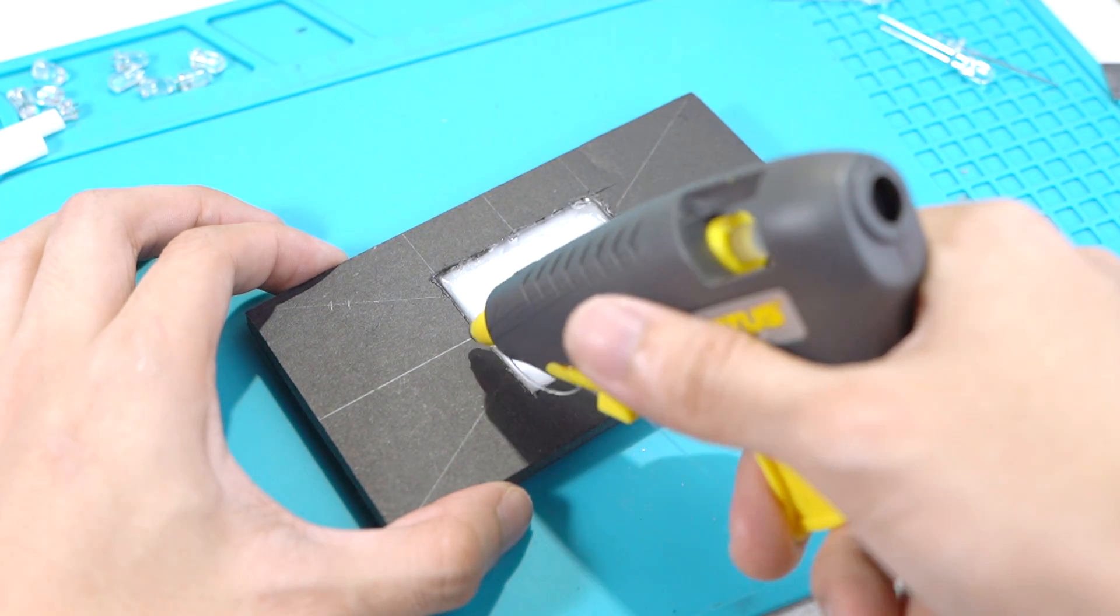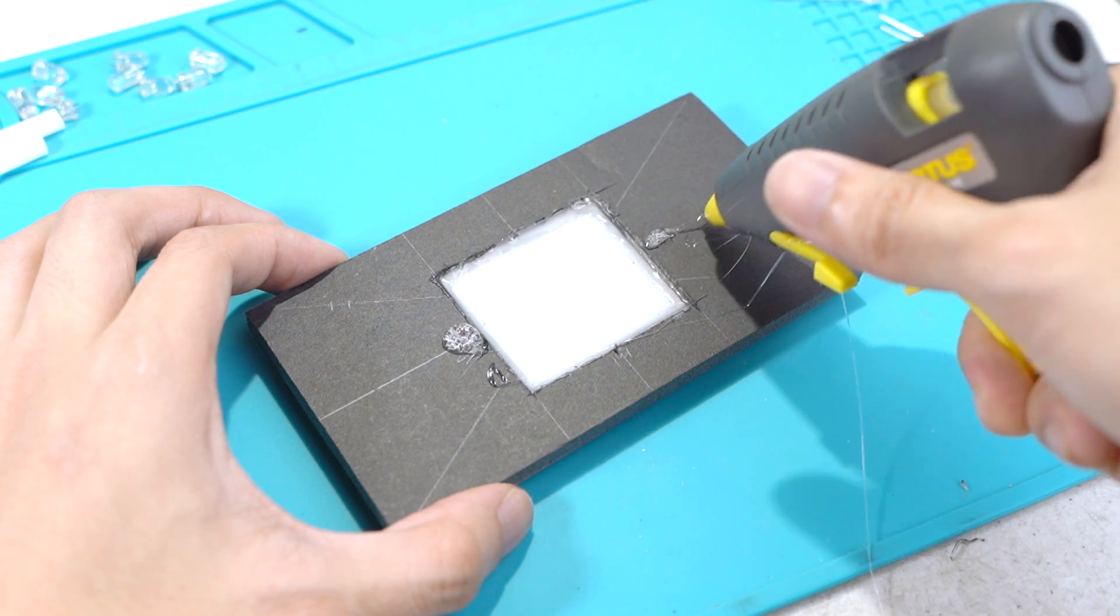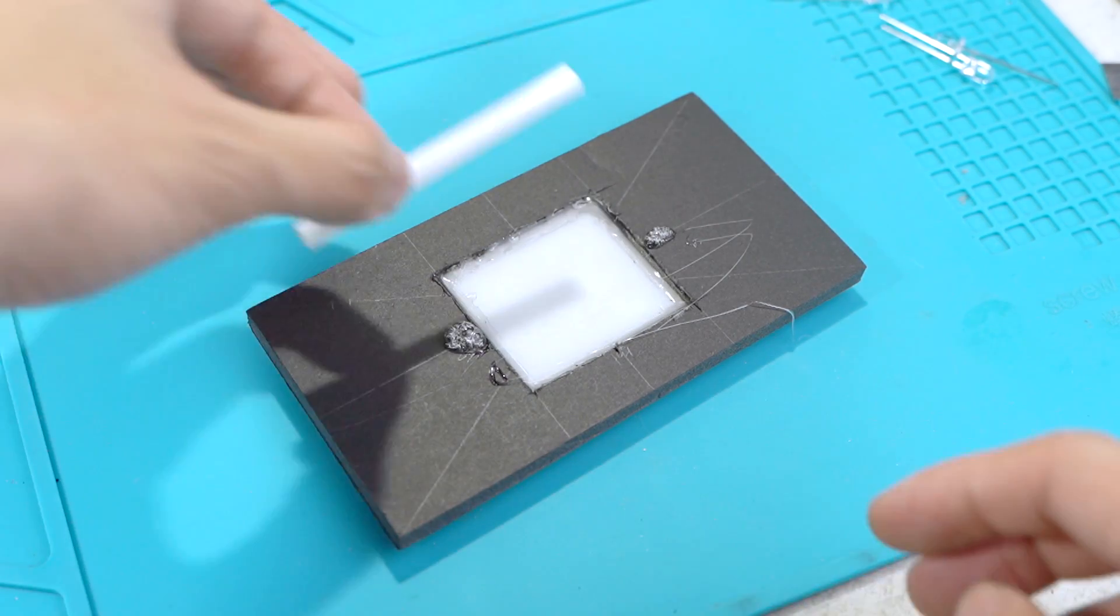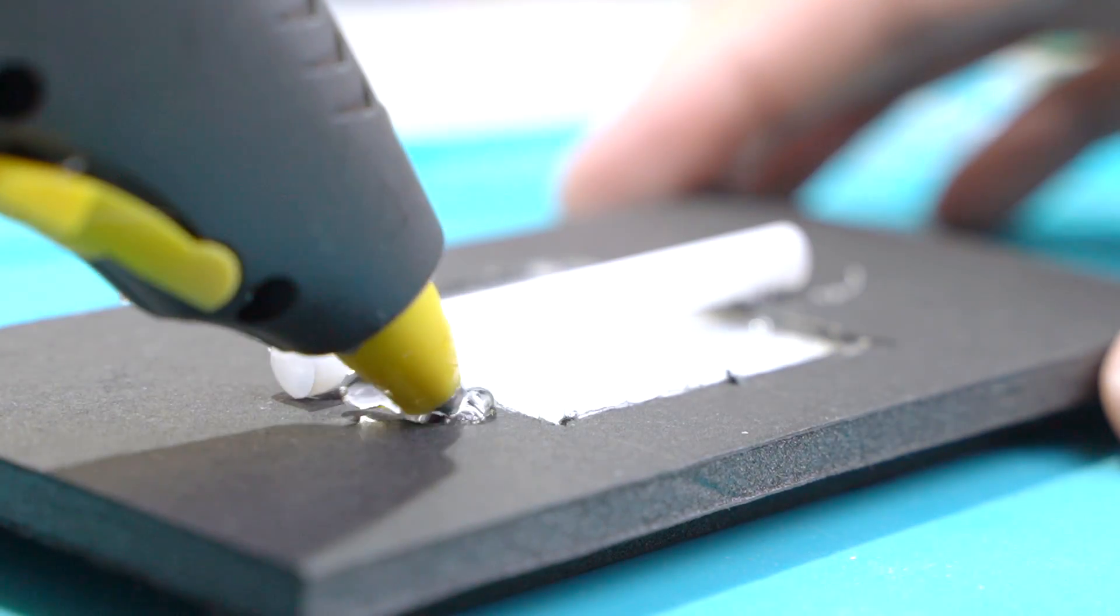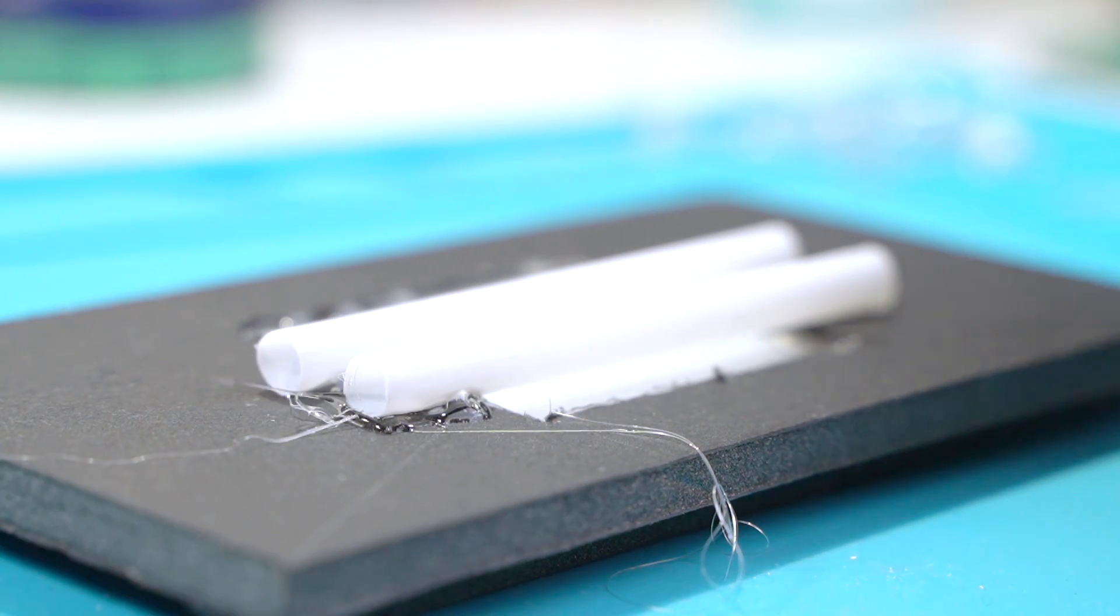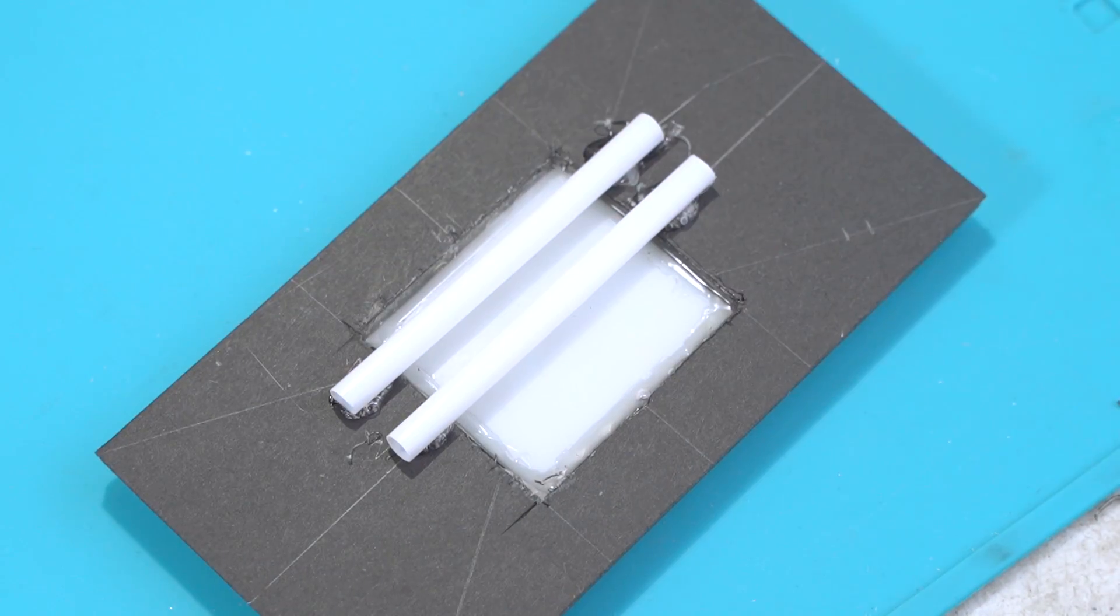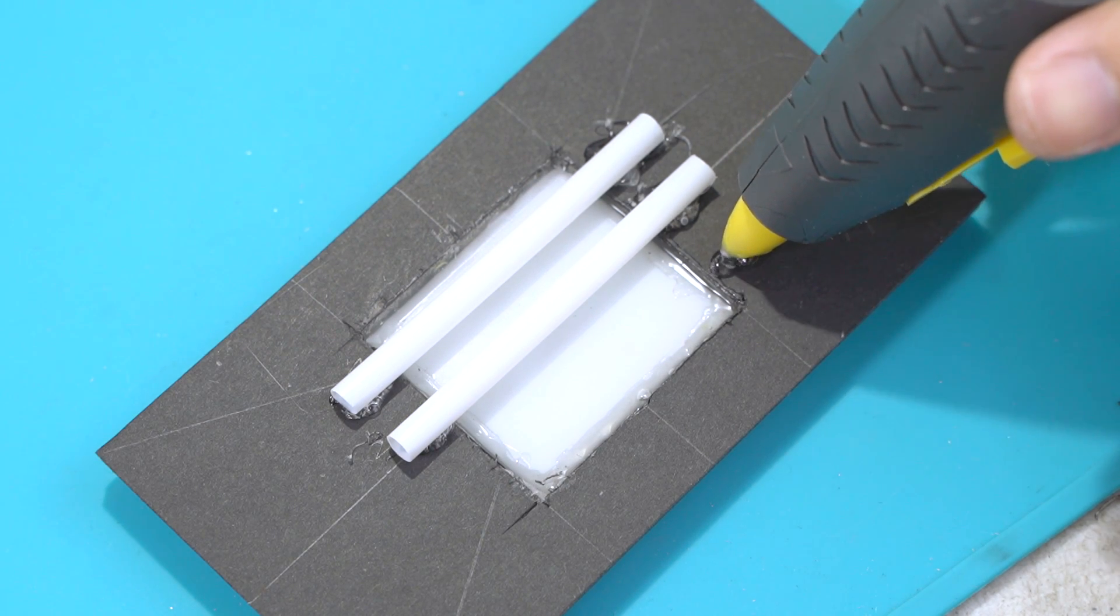Carefully hot glue one of your bendy straws across the center of your diffuser. Do it again but this time, at the sides. The more bendy straws, the better but I did find out that 3 was more than enough.